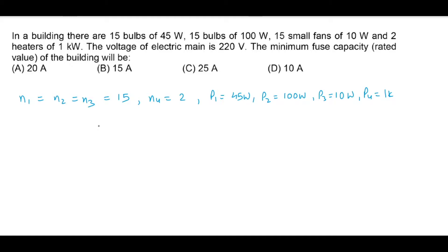In a building there are 15 bulbs of 45 Watt. So we have 15 bulbs, each of 45 Watt.